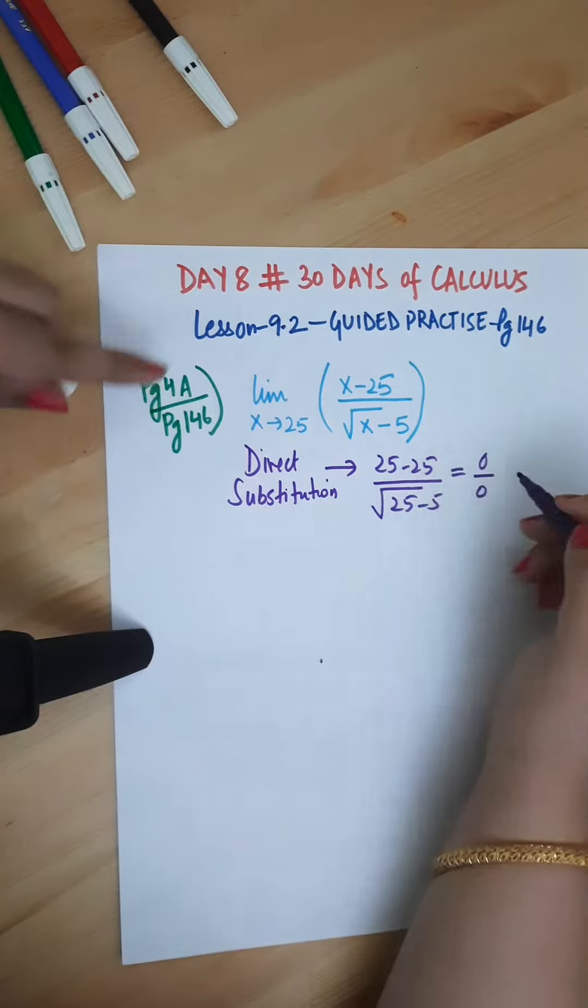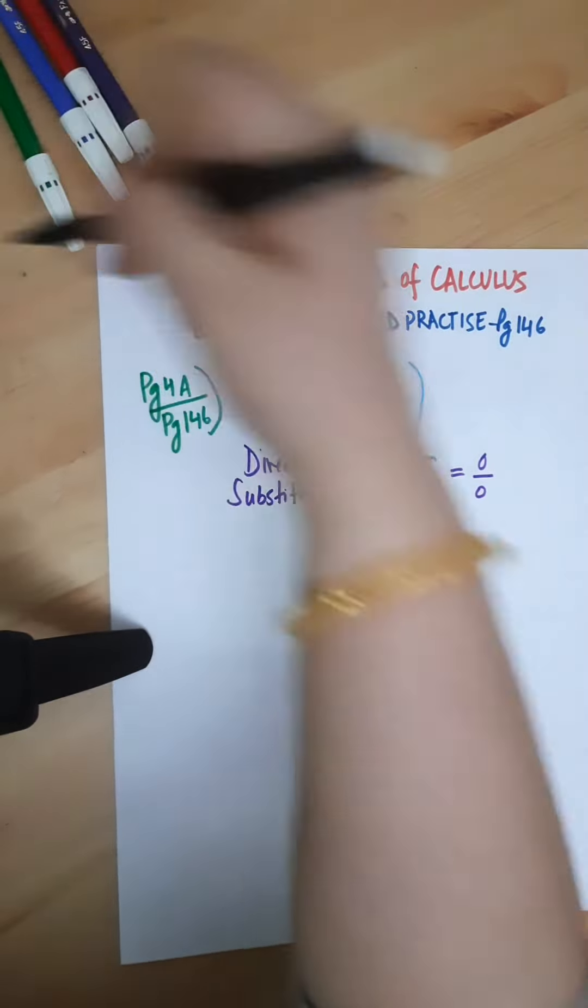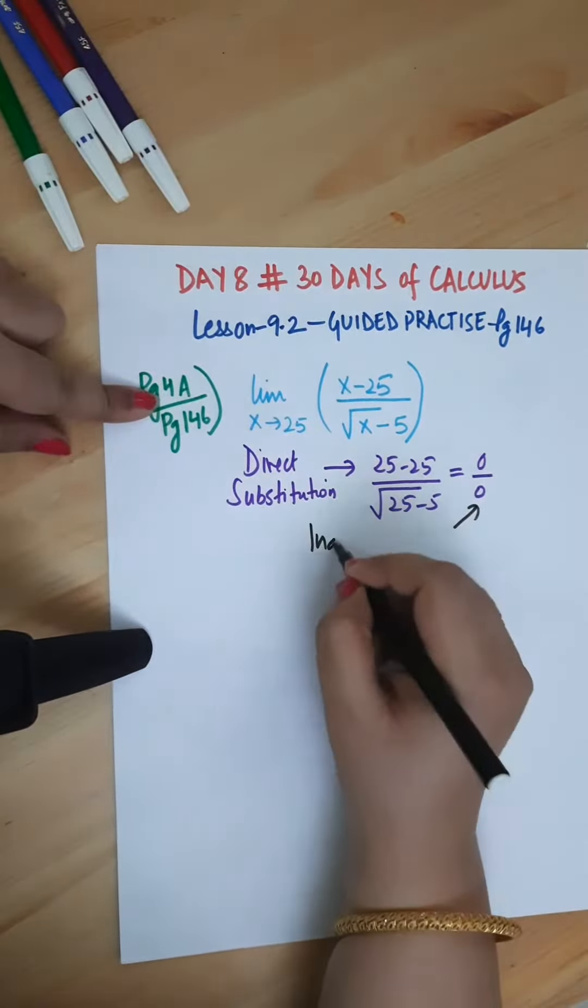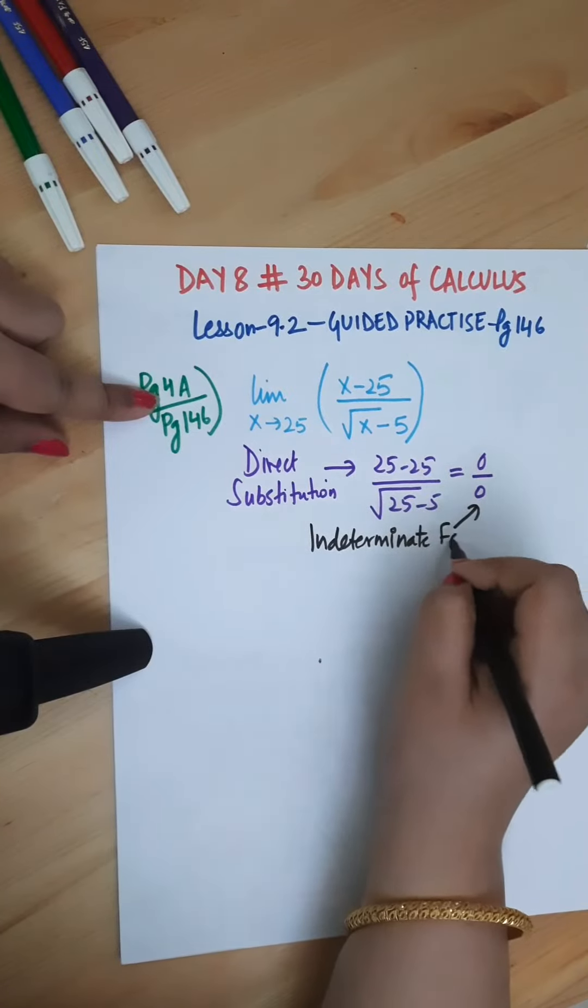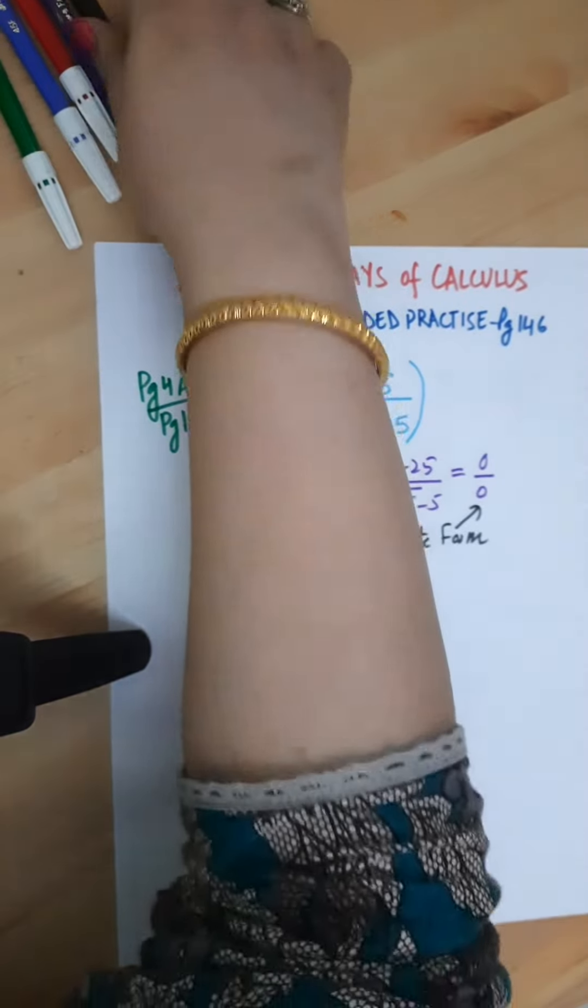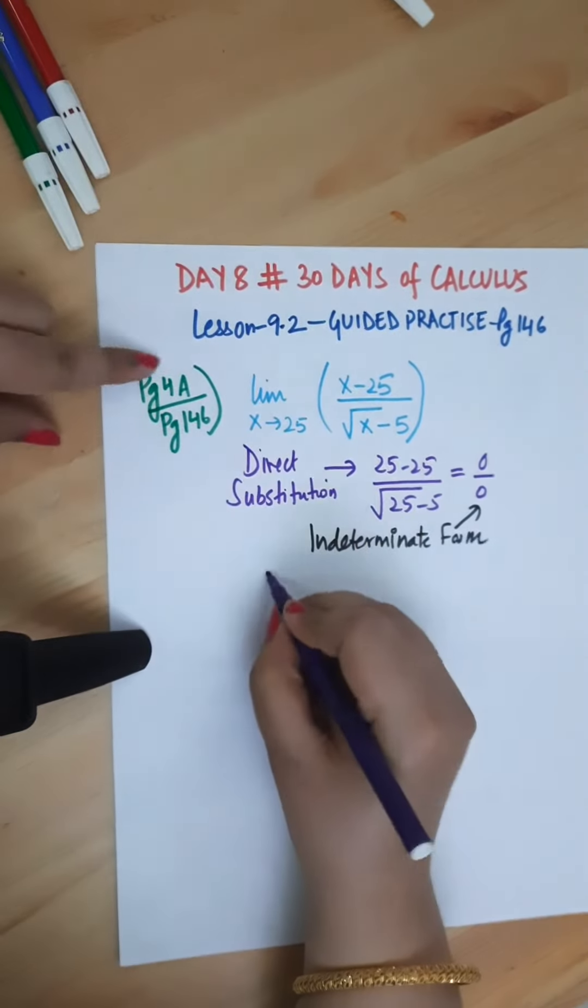So we have to think of something else in order to solve this. Since the direct substitution fails and we get indeterminate form, we can go ahead in such a problem where you see a radical in the denominator with a different method.